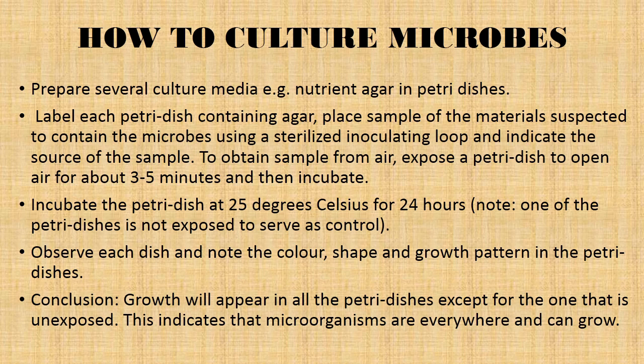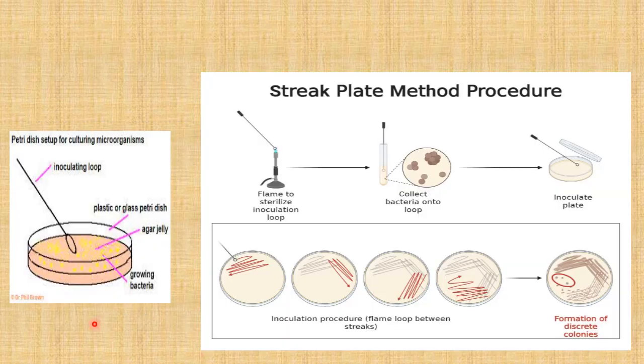Observe each dish and notice the color, shape, and growth pattern in the petri dishes. What we can conclude is that growth will appear in all the petri dishes except for the unexposed one. This indicates that microorganisms are everywhere and can grow. This is a pictorial representation of the process described in the previous slide.